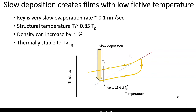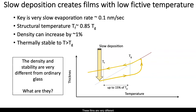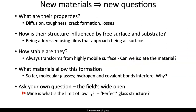Now, these films are very different than ordinary glass. They're denser by more than 1% and stable to considerably above Tg. So what are they? Well, new material gives new opportunities to ask questions. First, what are the properties of these films? Diffusion, toughness, crack formation, acoustic loss — all these topics are being addressed in the group. Second, these films have dramatically different properties at their surfaces. How are they affected? We approach that by using very thin films that are nearly all surface.